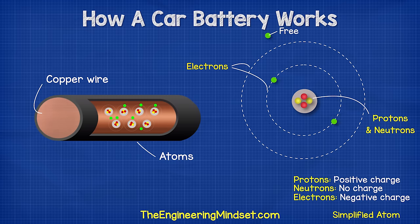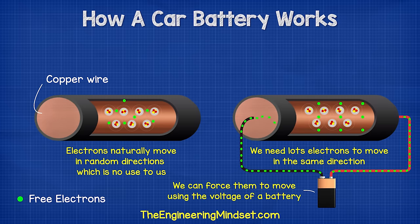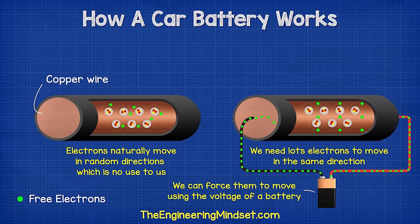Some materials like copper have an electron which is free to move to other atoms. If we connect a power supply such as a battery to a copper wire, then the voltage of the battery will push the electrons and they will rush to get to the positive terminal of the battery.